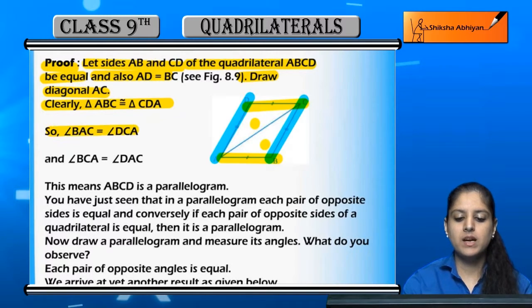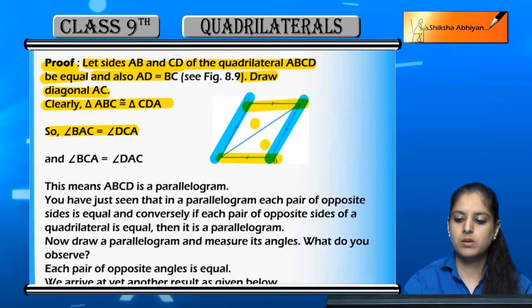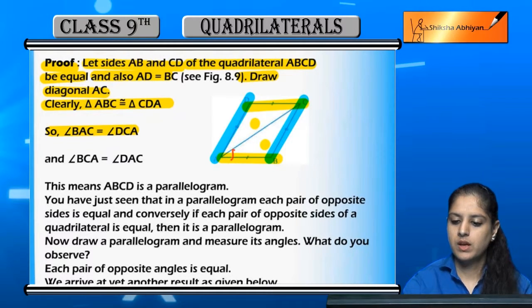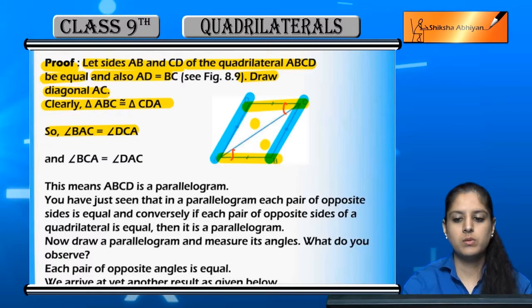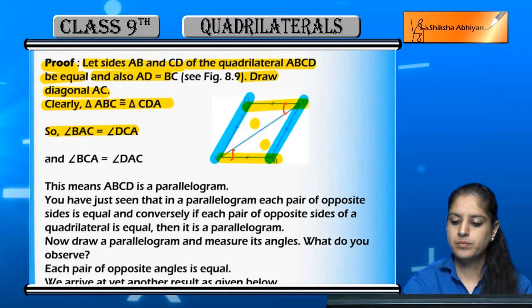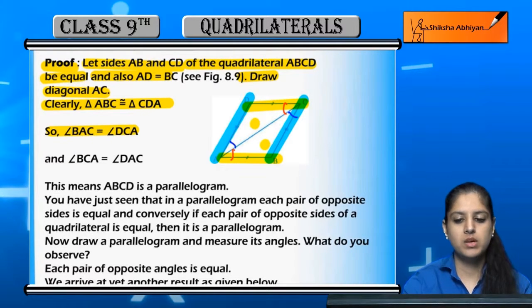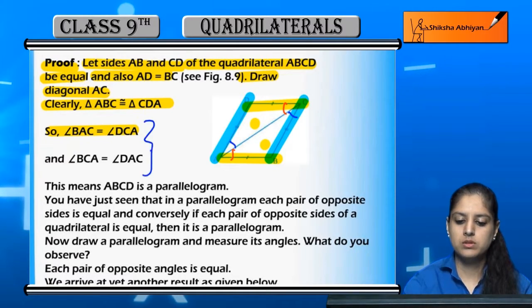So ultimately, angle BAC equals angle DCA, and angle BCA equals angle DAC — both by CPCT.